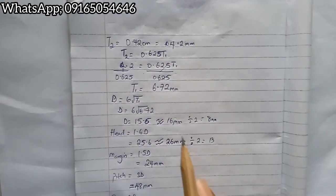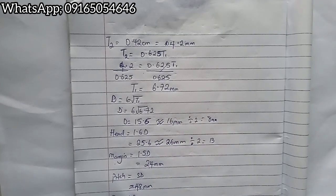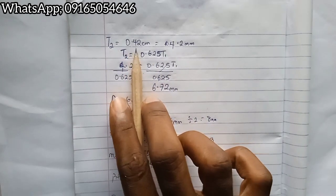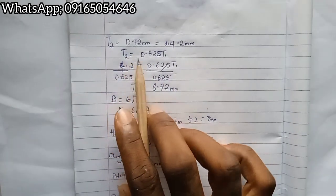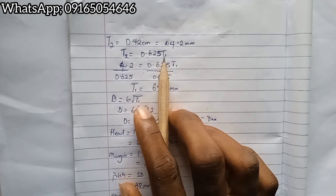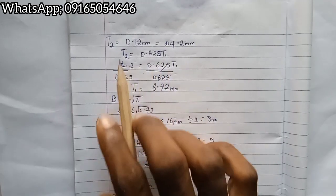Now we need to find diameter first before we can find the other parameters for the rivet. Since we're given the thickness of the cover plates to be this, and the formula for thickness of cover plate is 0.625 times t1, where t1 is the thickness of the main plate, we can solve for t1.